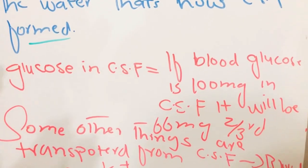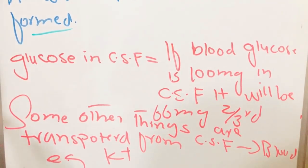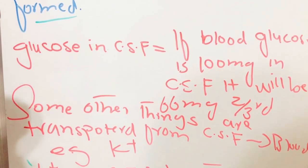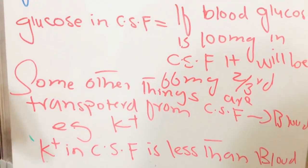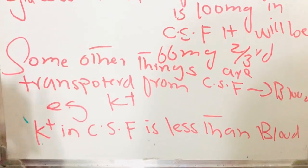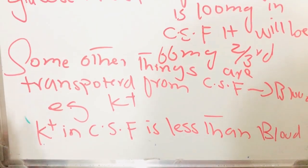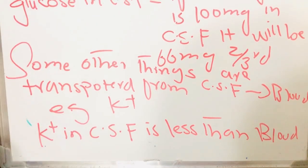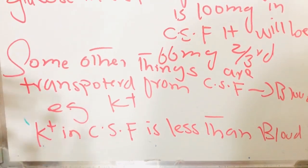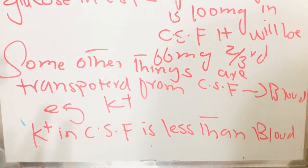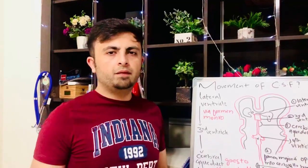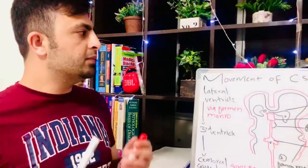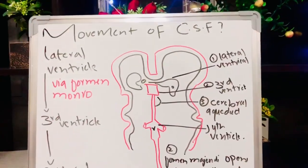The concentration of glucose in the cerebrospinal fluid is about two-thirds compared to glucose in the blood. For example, if we have 100 mg of glucose in the blood, we will have 66 mg of glucose in the CSF. Some substances are transported from the CSF to the blood — for example, potassium; the level of potassium in the CSF is less than in blood.